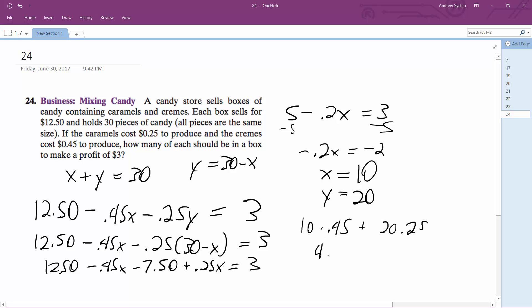So this is equal to $4.50, and then this is equal to, oops, 20 times 0.25, $5, so that's equal to 9.50, and then if you take 12.50 minus 9.50, we get $3 out, and that's our profit.